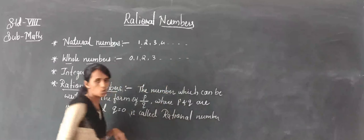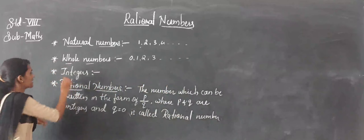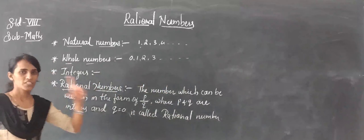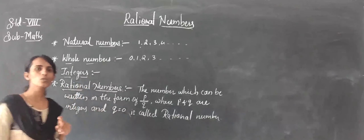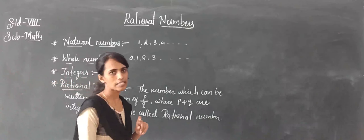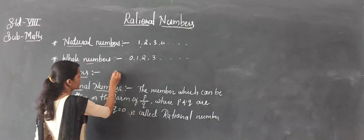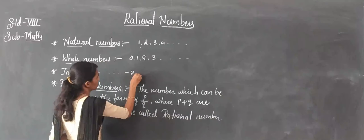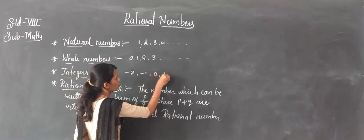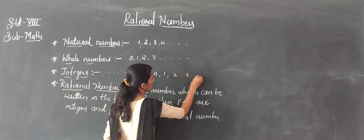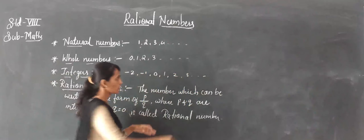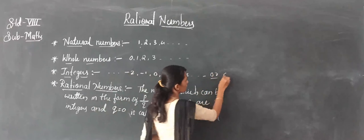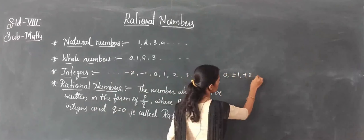After whole numbers we have integers. In the seventh standard there is a special topic on integers. Integers are all the positive and negative numbers — for example: ..., minus 2, minus 1, 0, 1, 2, 3, and so on. We can write this as 0, plus or minus 1, plus or minus 2, and so on.